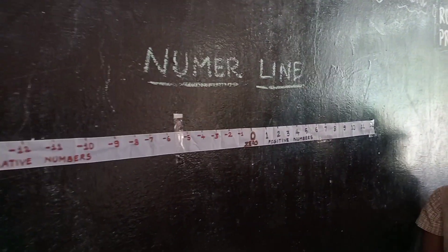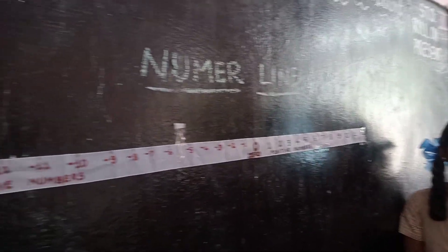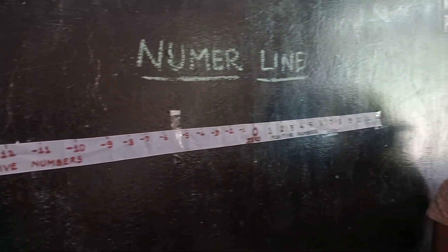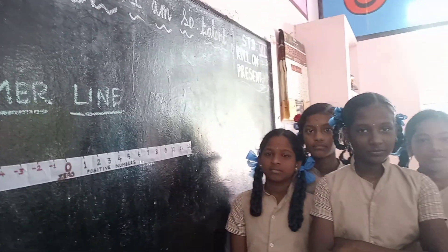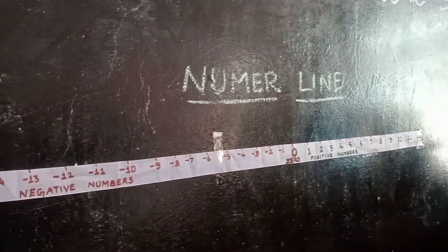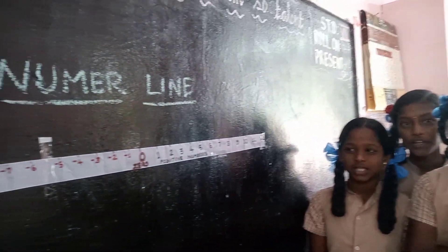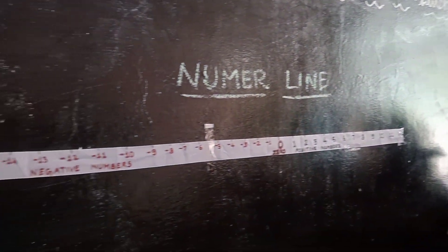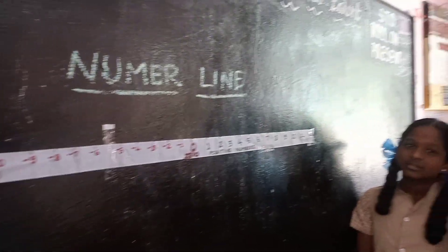Children, shall we recall the number line? Yes, please. What can you see in this ribbon? A number line. Yes, what are the numbers marked in this number line? Integers. What are integers? Integers are positive numbers, negative numbers, and zero.